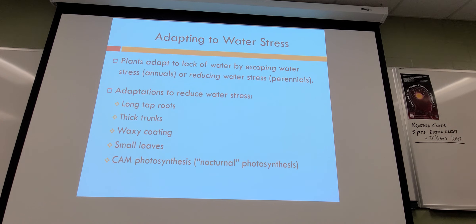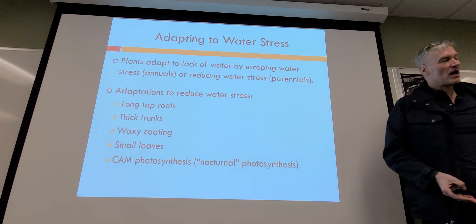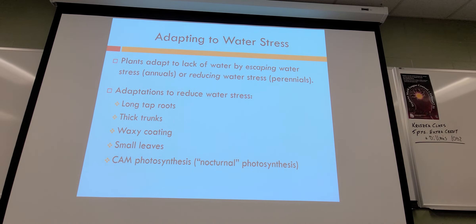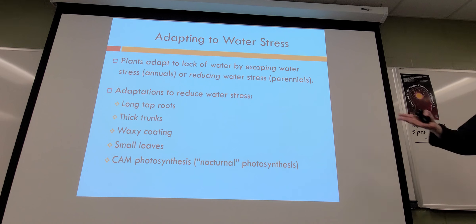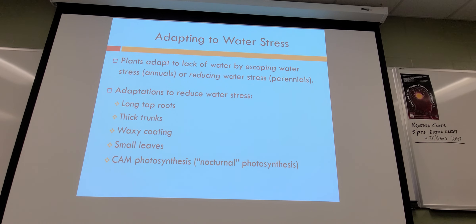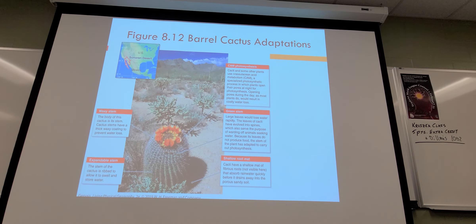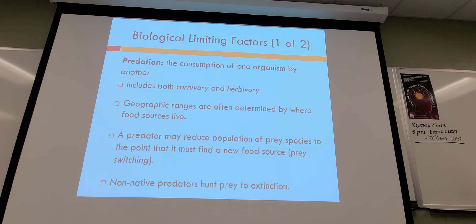A number of different plants develop similar strategies to reduce water stress: long roots to reach water during dry periods, thick trunks to store more water, waxy coatings, small leaves, and modified photosynthesis. Cactuses are the classic example — people generally know what a cactus is.